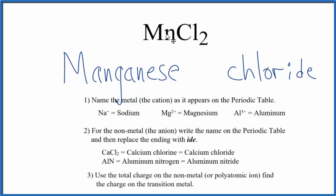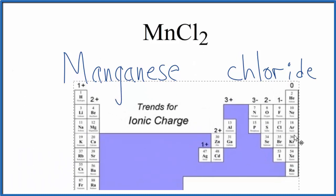But manganese, Mn, that's a transition metal. And that means that because it's a transition metal, it can have different oxidation states depending what it's bonded to. Here, it's bonded to chlorine. So if we go to the periodic table, we look up chlorine.